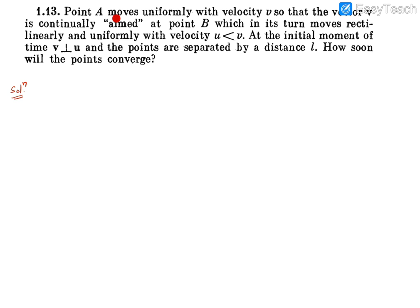It says point A moves uniformly with velocity v so that the vector v is continually aimed at point B, which in its turn moves rectilinearly and uniformly with velocity u which is less than v. At the initial moment of time, both velocity vectors are perpendicular and the points are separated by a distance L. The question asks how soon will these points converge?